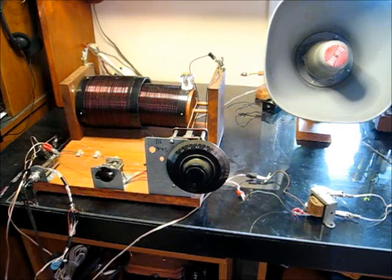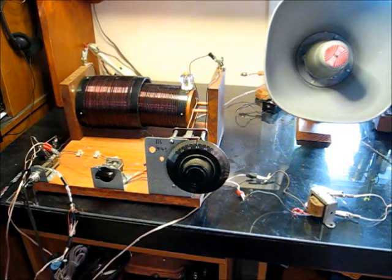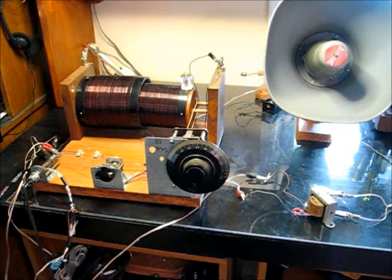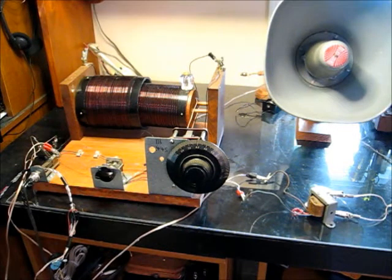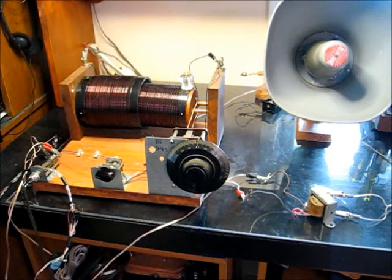The crystal set is a classic sliding coil set with series tuning on the antenna coil and parallel tuning on the detector coil. In this demonstration, the diode is a Radio Shack 1N34 I bought about 20 years ago.